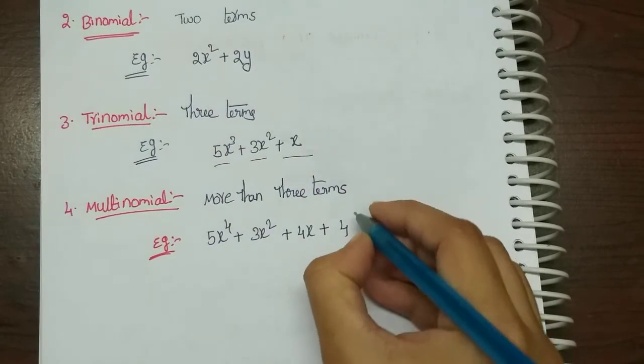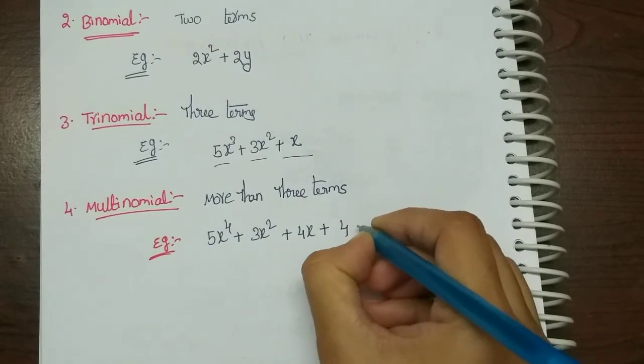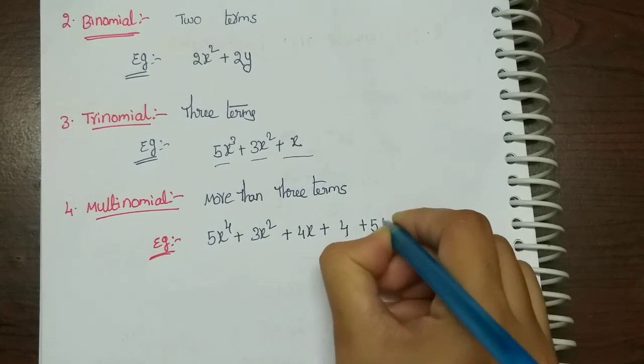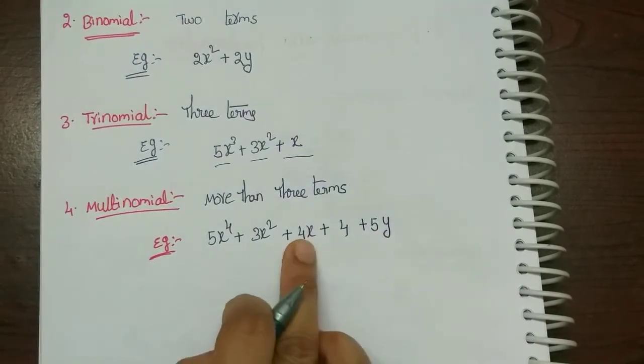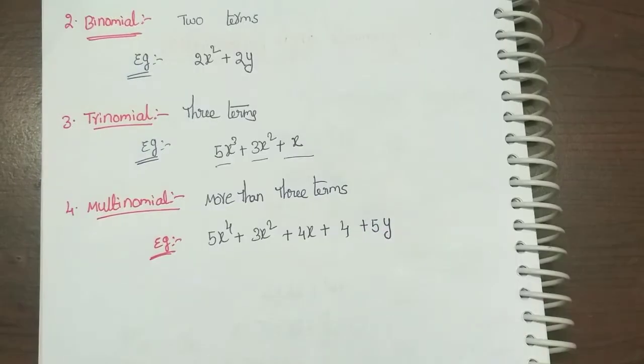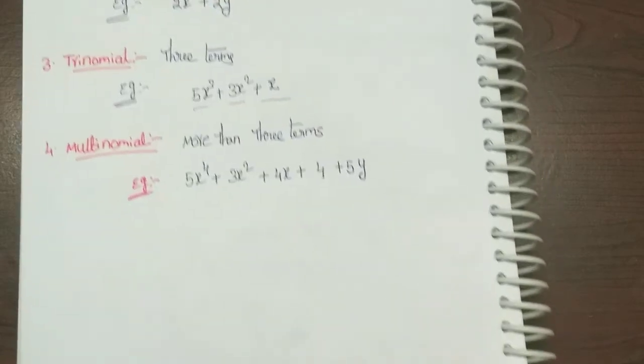Suppose we add plus 5y: 1, 2, 3, 4, 5 — five terms. That is also a multinomial.